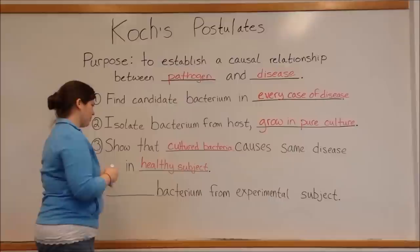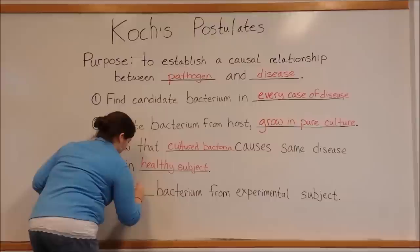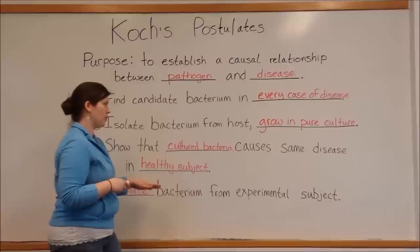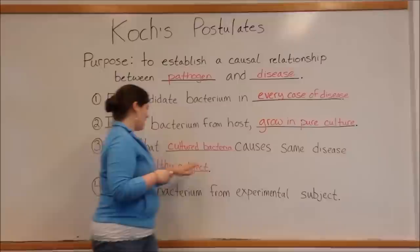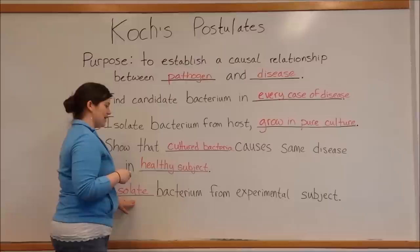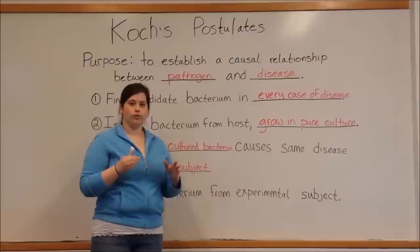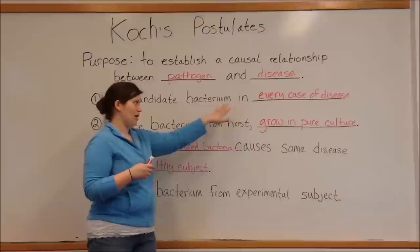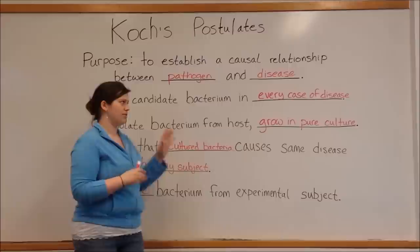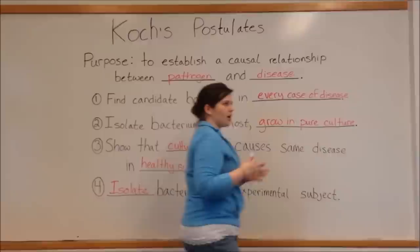Finally, the fourth criterion is that you have to isolate that same bacterium from the experimental subject. So once you have taken the bacterium in pure culture and infected a healthy subject to show it causes the same disease, you then have to re-isolate that same bacterium from the experimental subject. This proves definitively that the original bacteria found in every case of the disease is capable of causing that same disease in an experimental subject.